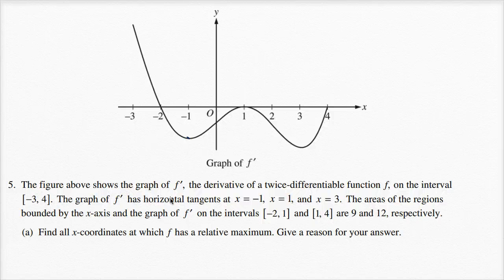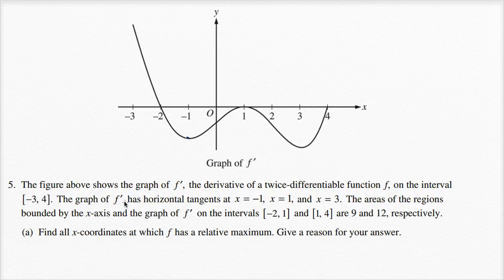The figure above shows the graph of f prime, the derivative of a twice-differentiable function f. On the closed interval from negative three to four, the graph of f prime has horizontal tangents at x equals negative one, x equals one, and x equals three.